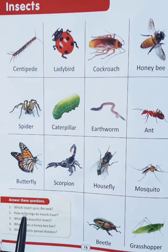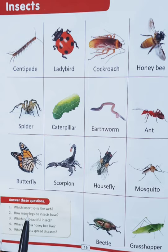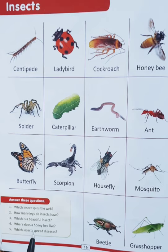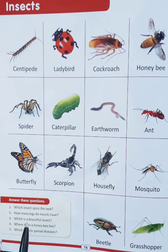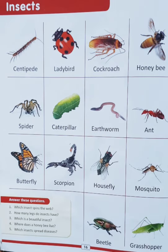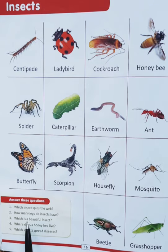The first question is: which insect spins their web? The answer is spider. The second question is: how many legs do insects have? The answer is six legs.